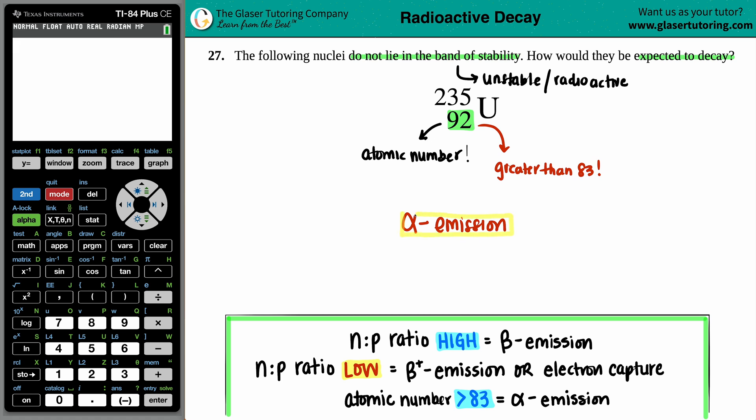And that's it. So alpha emission all the way. I don't have to talk about n to p ratios. All I'm just shooting for is that atomic number. And there you go. Hopefully this helped. Thank you so much for viewing the video.